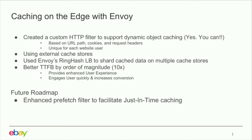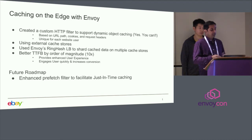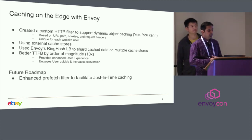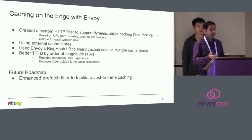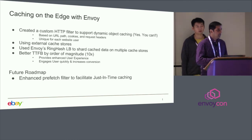We used Envoy's ring hash load balancer to enable sharding, because with multiple ATS instances you want cache stored and retrieved from one consistent instance. The ring hash LB supports providing a string on which to hash and pick the upstream. After rolling this out a few months back, we started seeing tremendous improvement in TTFB — now we move to the POP and in many cases we don't even need to access the data center to get the data. It's up to 10 times better.